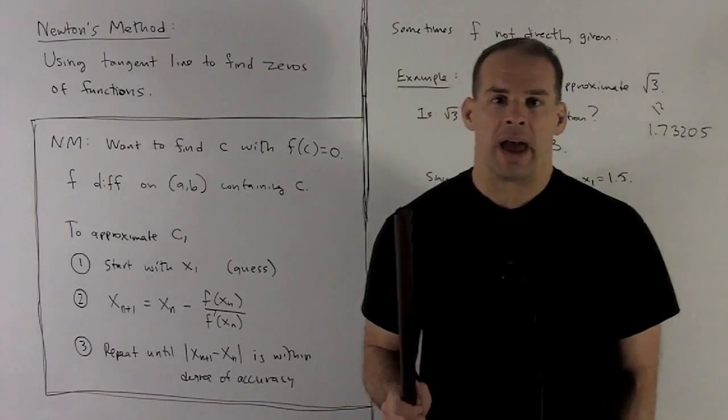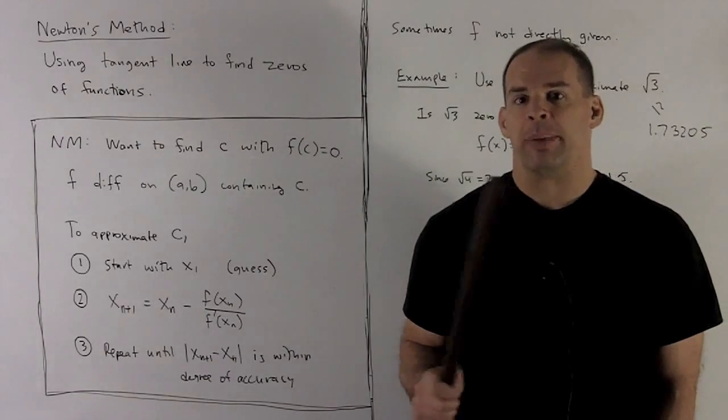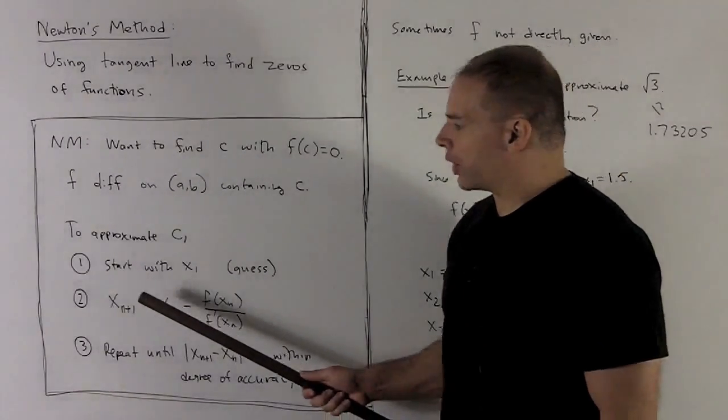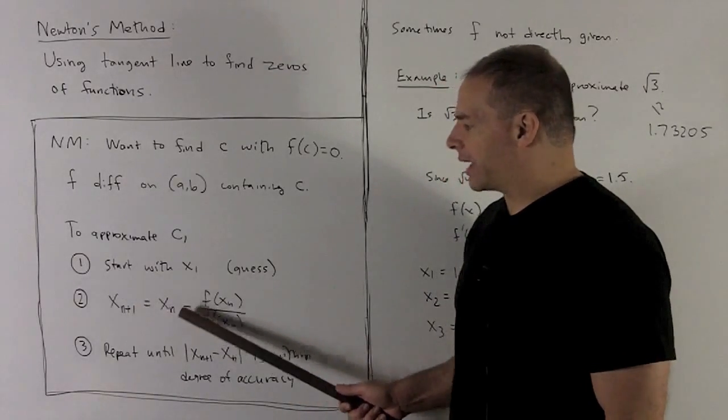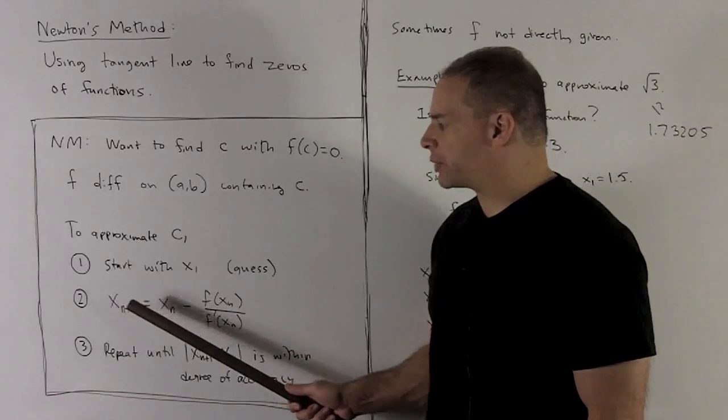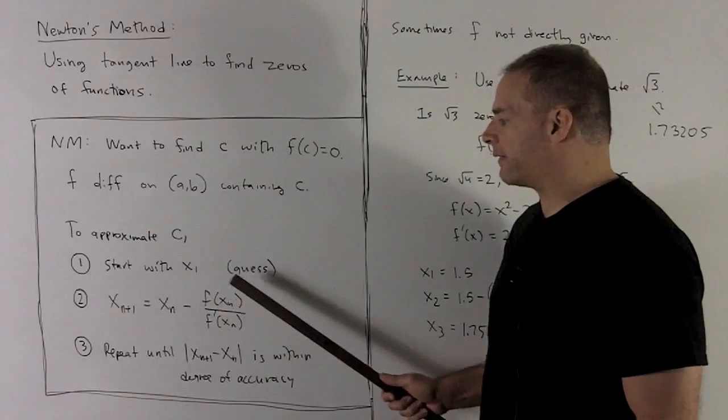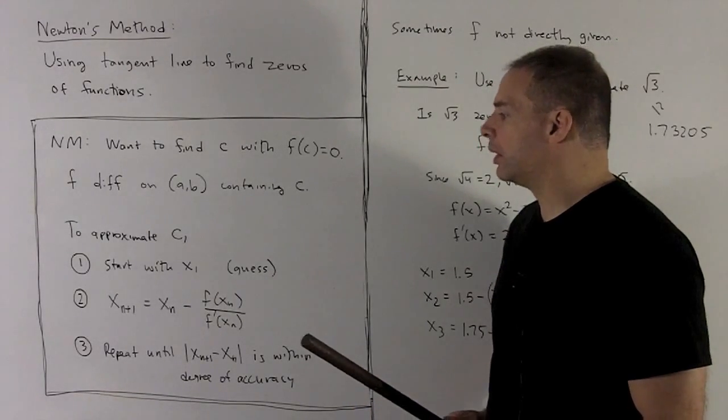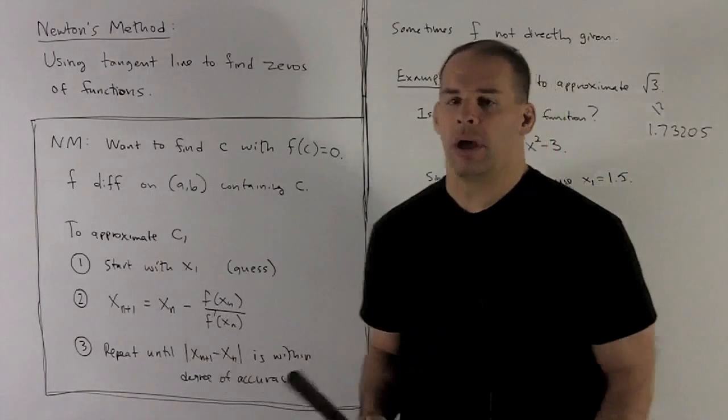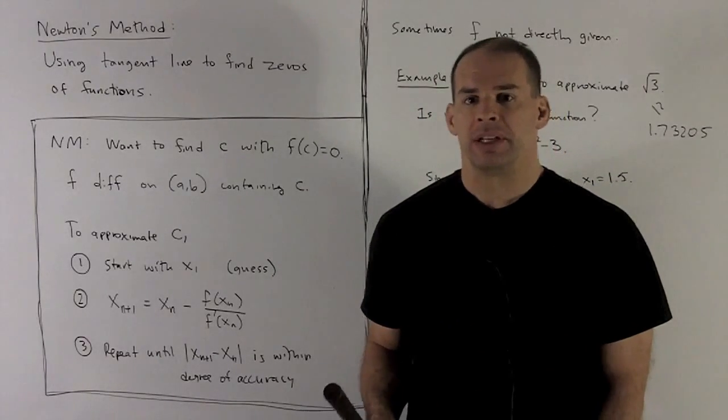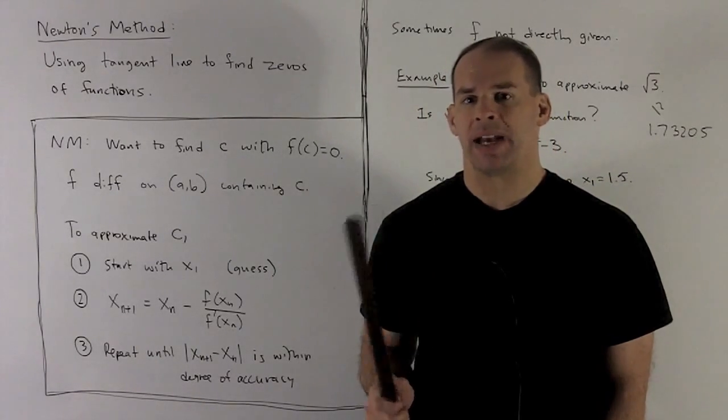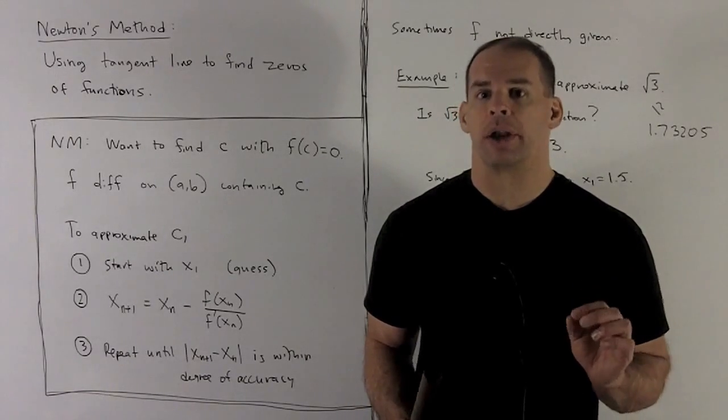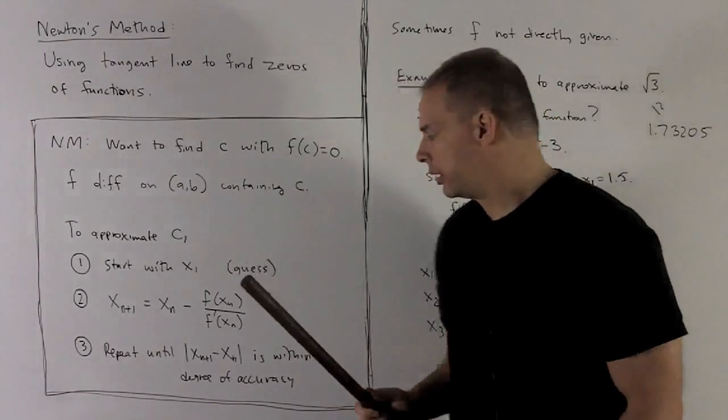Then, we're going to have a method for generating an even better guess. So that's going to be given by this formula here. If I have x sub n, I get my next guess by taking x sub n, subtracting off f of x sub n, divided by f prime of x sub n. This procedure here, I'm going to keep repeating it until x sub n plus 1 minus x sub n in absolute values is within my degree of accuracy wanted.